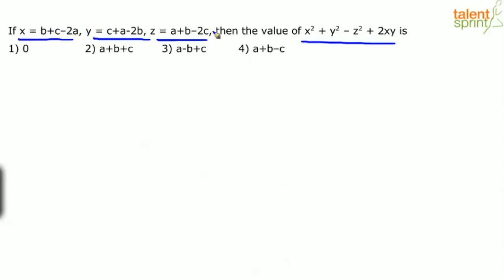No conditions are given. It simply states the expressions for x, y, and z with no restrictions on a, b, c. When there's no condition given in the question, it implies an unconditional application — you can apply any values. No strings attached. So let me take a equals b equals c equals 1. Let's keep it simple and see what happens.